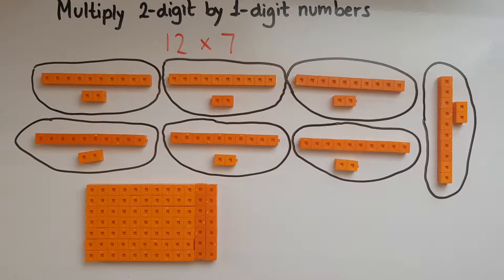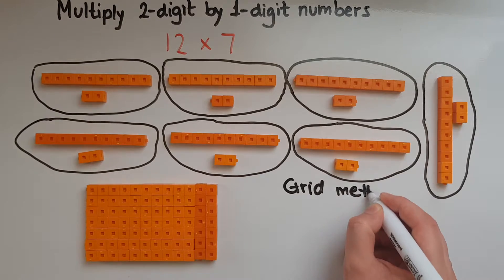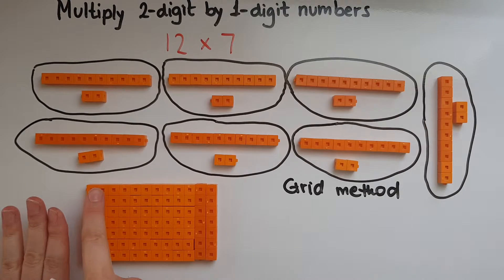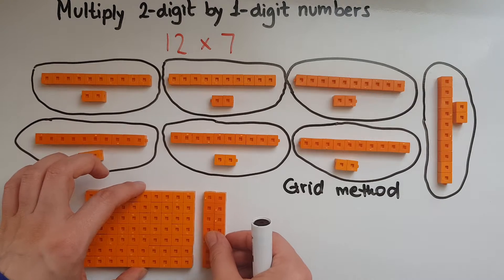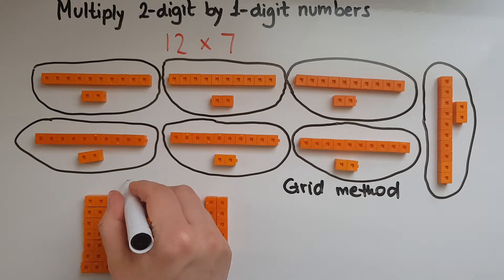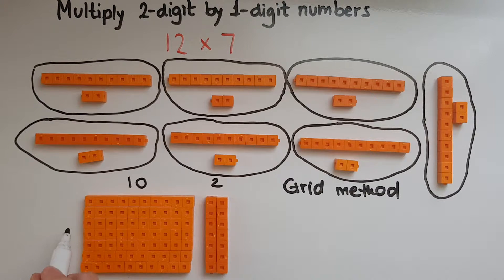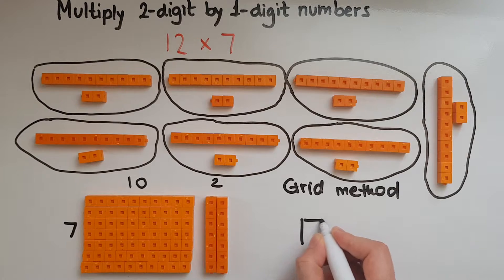One method to work this out is called the grid method. I've got 12 on this side, so what I'm going to do is split it into 10 and 2. So 10 and 2, and of course there are seven rows throughout. I'll create a small grid over here.